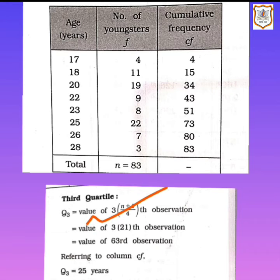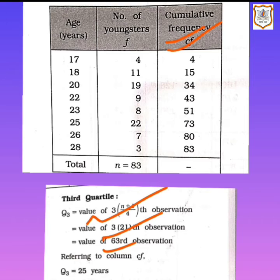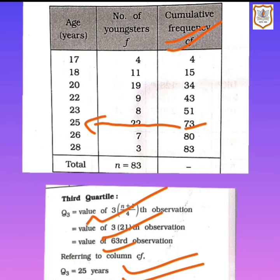For Q3, the formula is 3(n+1)/4, so 3×(83+1)/4 = 3×21 = 63rd observation. In the cumulative frequency column, the 63rd observation lies in 73, and in front of that the variable x is 25. So Q3 = 25 years. We now have Q1, median, and Q3.